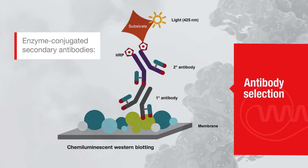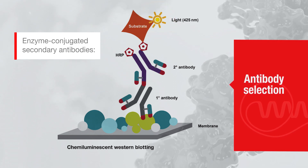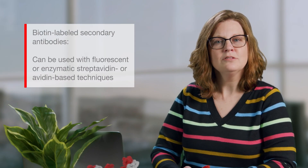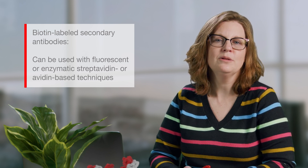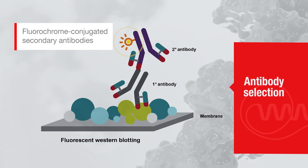Antibodies conjugated to enzymes such as horseradish peroxidase or alkaline phosphatase can be used in conjunction with a chemiluminescent or fluorogenic substrate to create a detectable signal. These antibodies offer good signal amplification and, when paired with high-sensitivity substrates, improve detection of low-abundance proteins. Utilizing a biotin-conjugated secondary antibody allows one to use the same secondary antibody in multiple applications. Fluorochrome-conjugated secondary antibodies are easy to use and a great choice for multiplex experiments. You can choose from a wide range of offerings including our Invitrogen Alexa Fluor Plus dyes from the Thermo Fisher Scientific website.